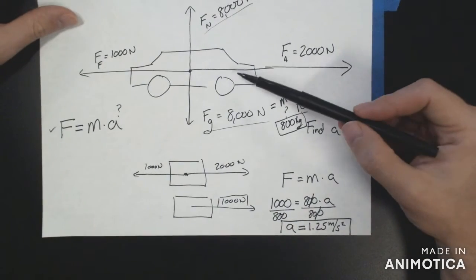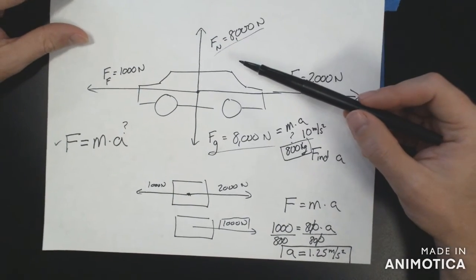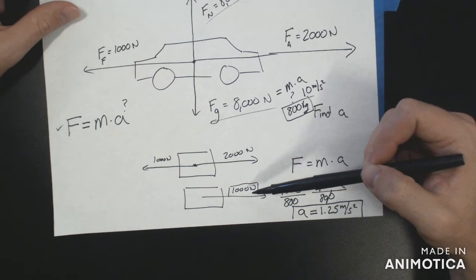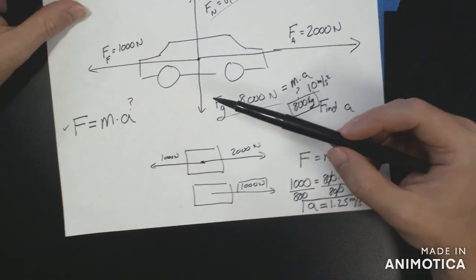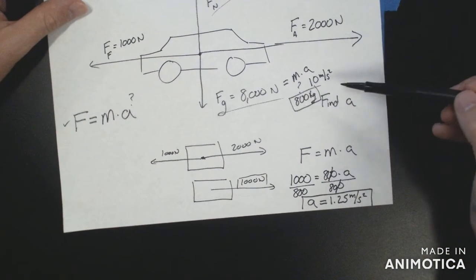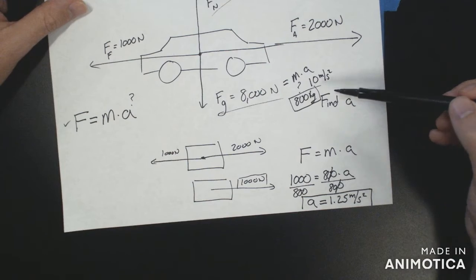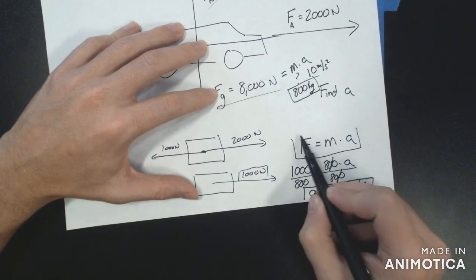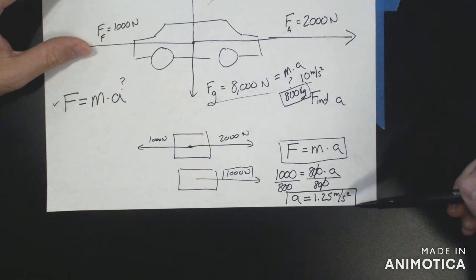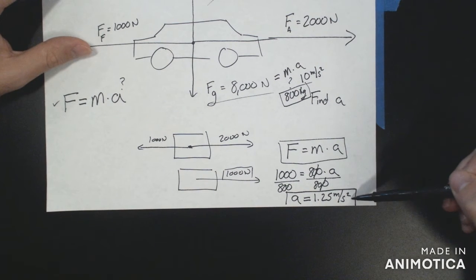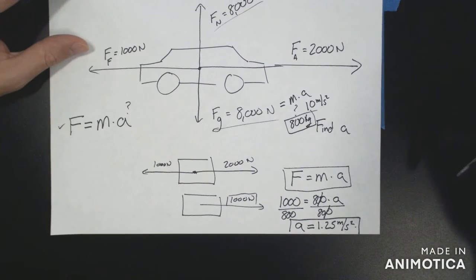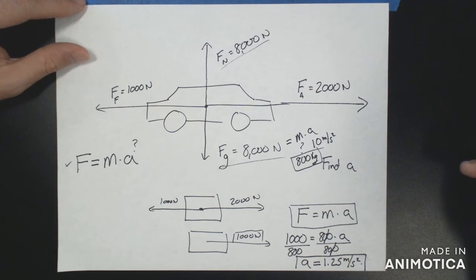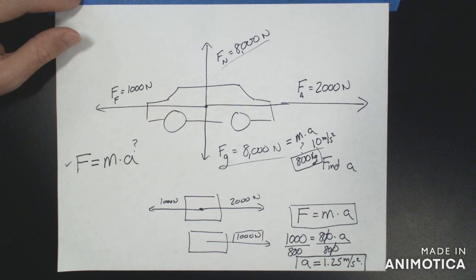With one object, I reduced the forces down to one net force, found the mass by looking at the force of gravity, and applied Newton's second law to find the acceleration. That's a fairly simple example — let's take a look at a more complicated one.